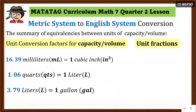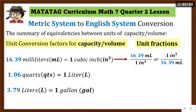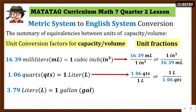From these conversion factors, we have what we call unit fractions. Unit fractions are used to convert or change the given unit to another unit. From this, we can say: 16.39 ml over one cubic inch, or its inverse, one cubic inch over 16.39 ml. Second: 1.06 quarts over 1 liter, or 1 liter over 1.06 quarts. And the last: 3.79 liters over 1 gallon, or 1 gallon over 3.79 liters. We have options depending on which unit we want to change.